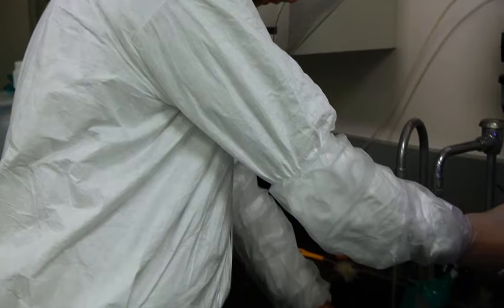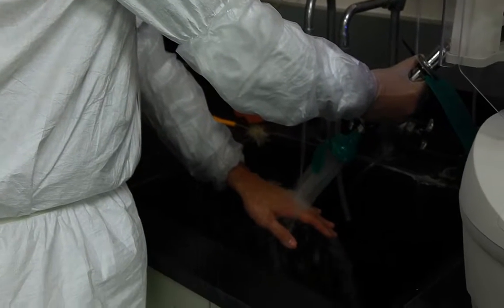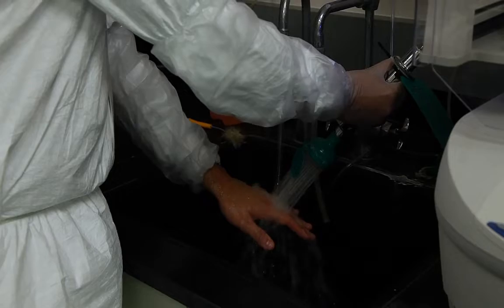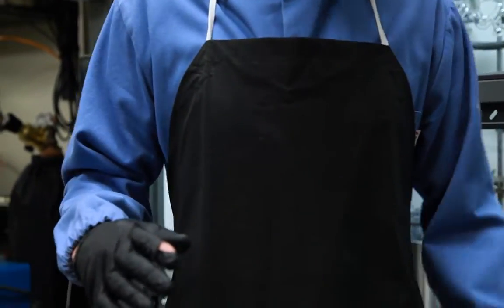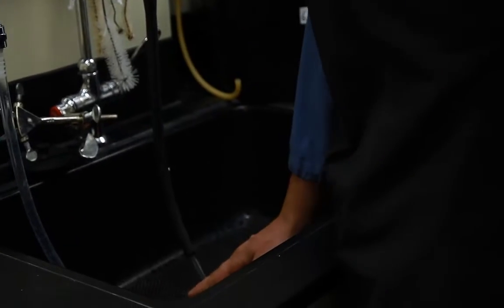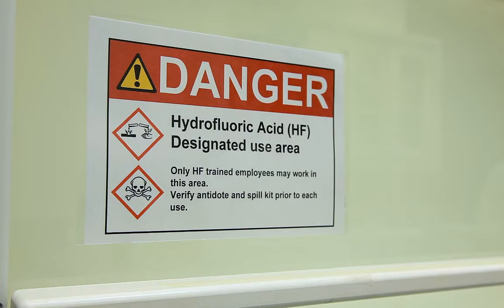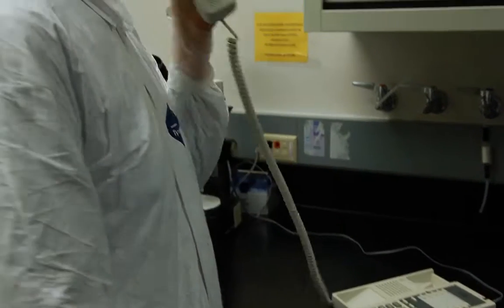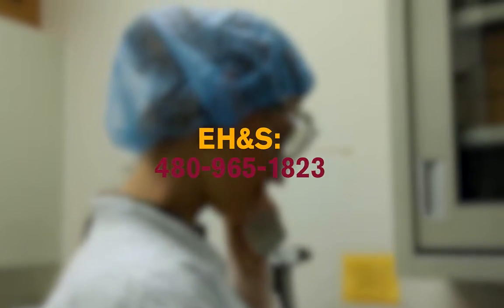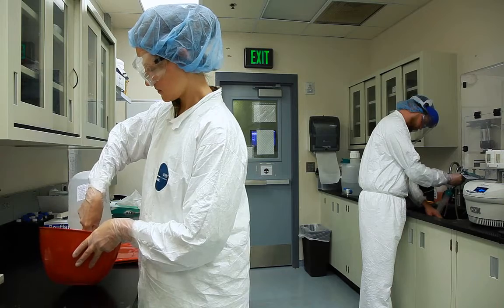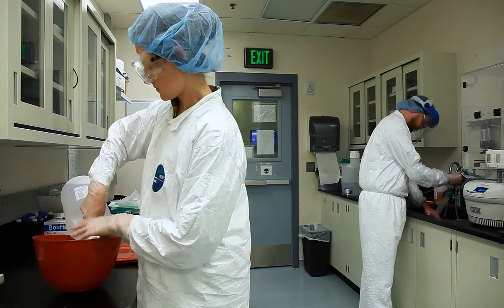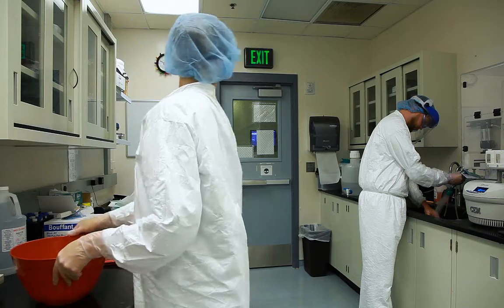In the event HF contacts your skin, remove all the contaminated clothing immediately within seconds. Flush affected area for five minutes. Followed immediately with the application of the antidote and immediate medical attention. Quick and correct action is critical if exposed to HF. Call 911. Call EH&S at 480-965-1823. Since you should not be working alone with HF without supervisor approval, a fellow researcher should follow this procedure.